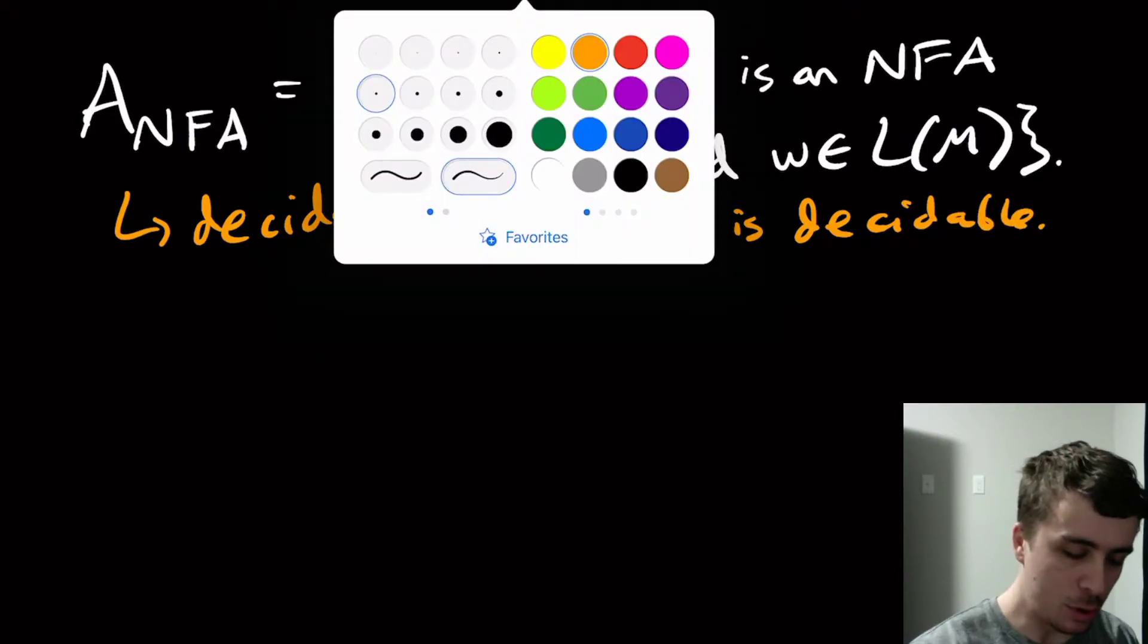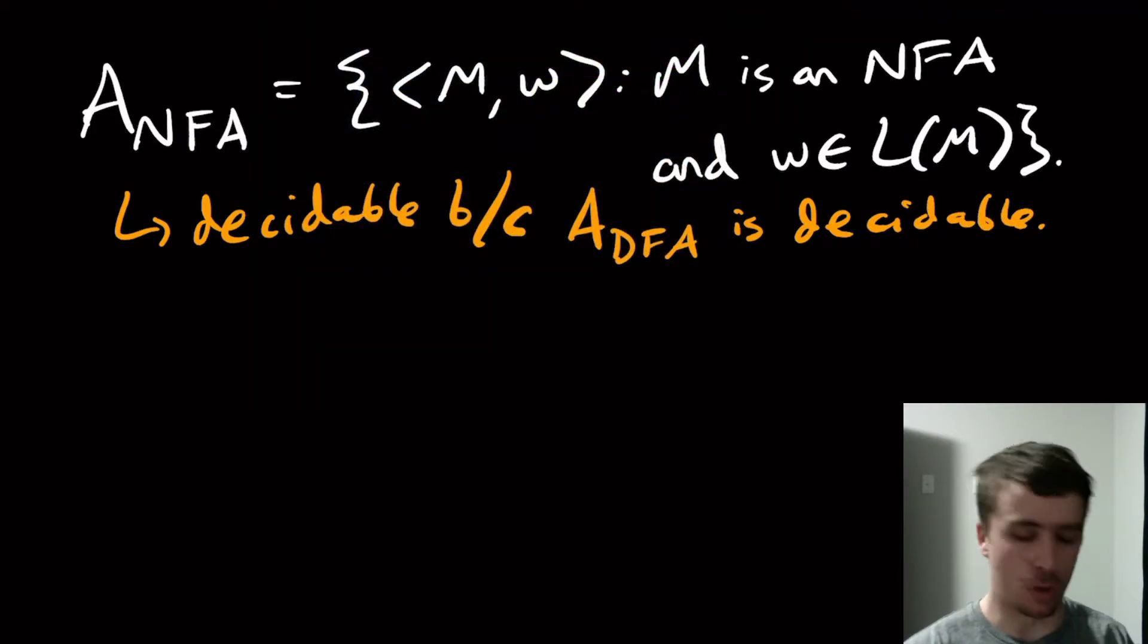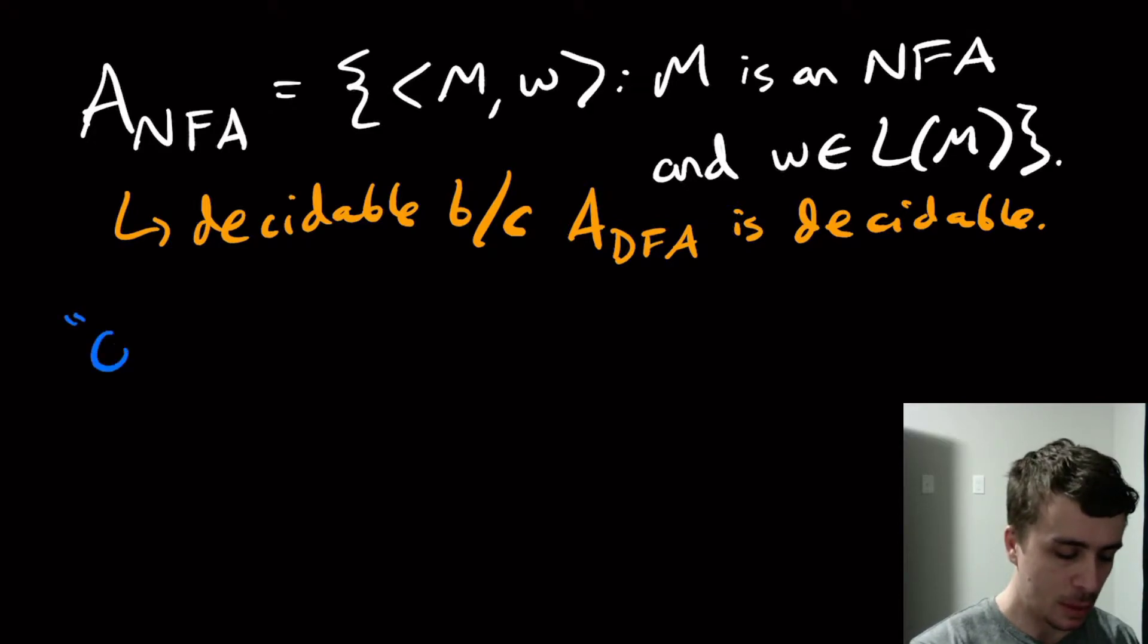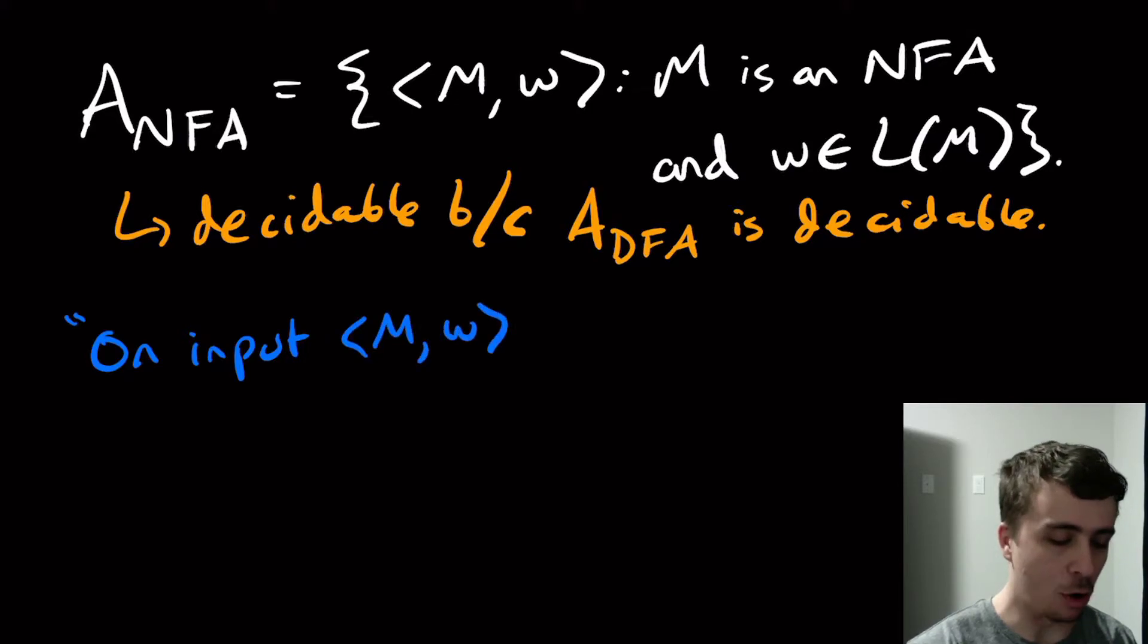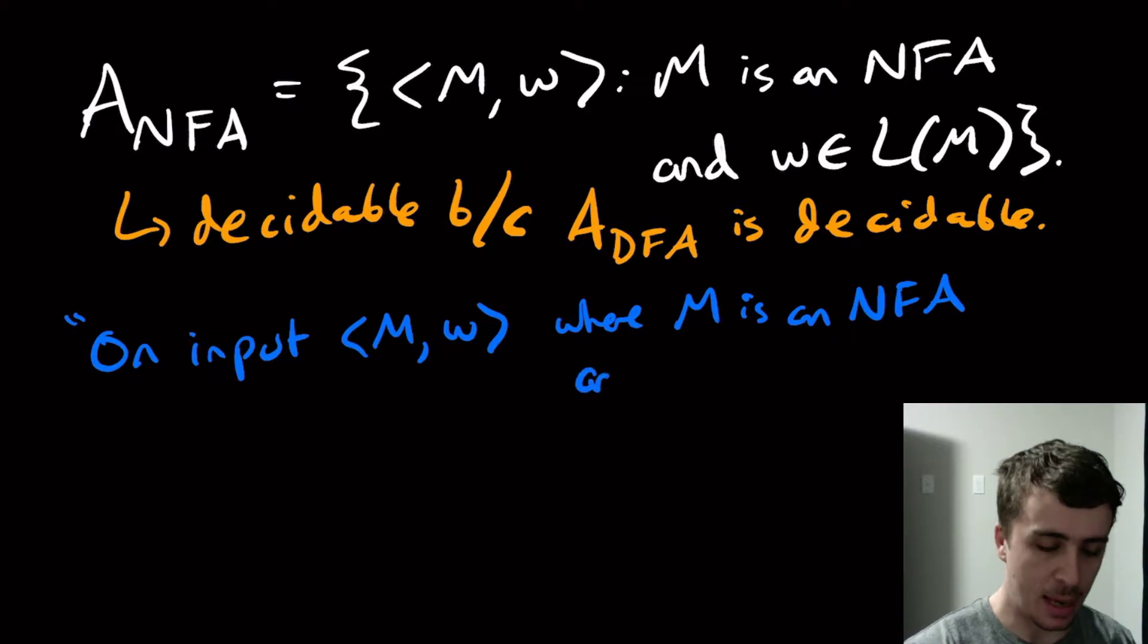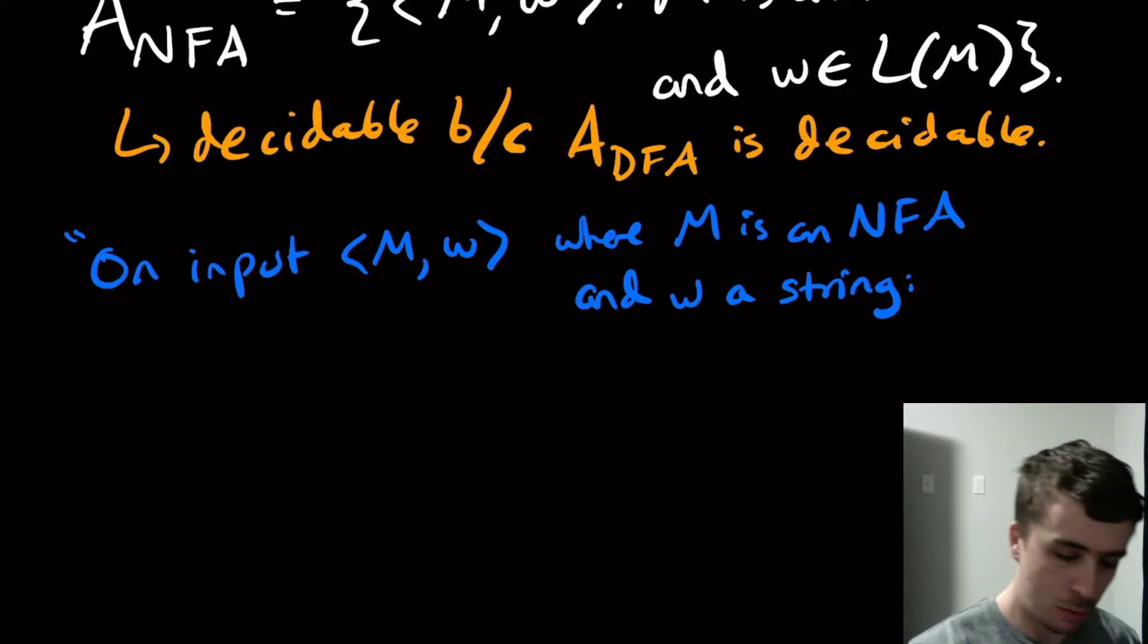And the way that we'll do this is again with a high level description. So again, we'll have on input. So we're just describing a high level algorithm here. On input MW, where M is an NFA this time, and W is a string.